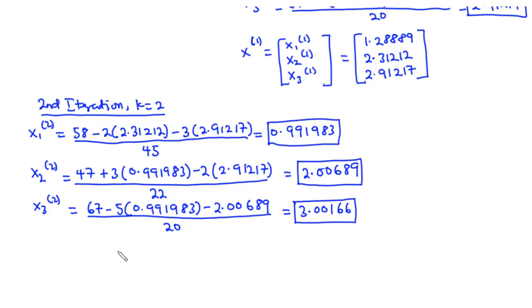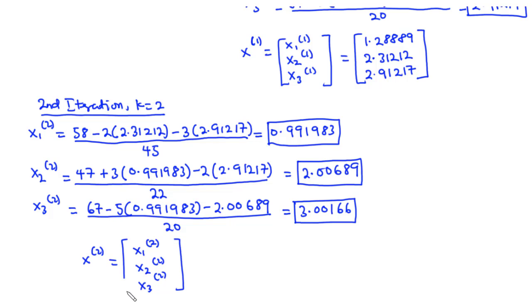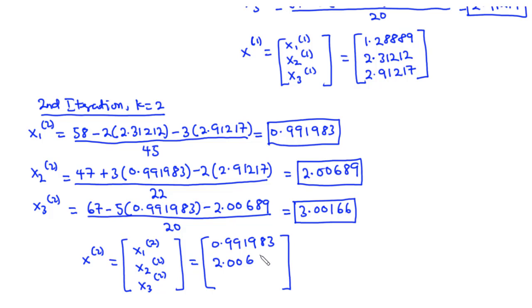At the end of the second iteration step, x(2) = [x1(2), x2(2), x3(2)] = [0.991983, 2.00689, 3.00166].